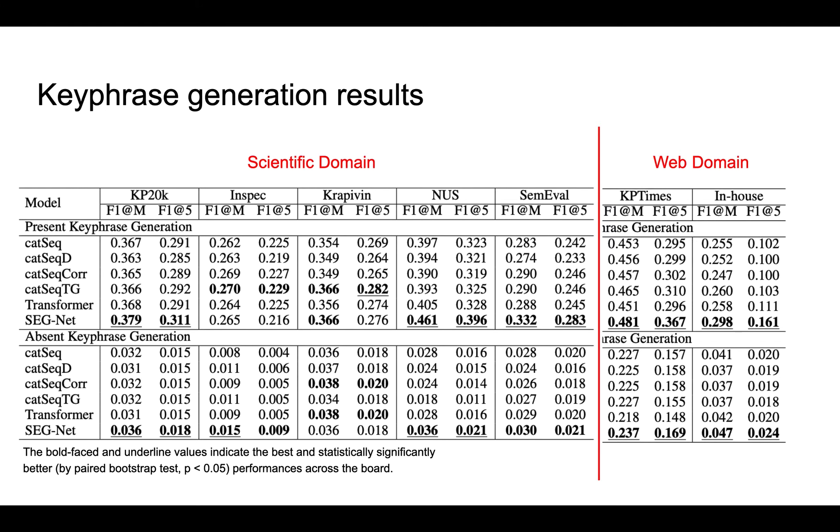This table shows the performance of SIGNET on the seven datasets, compared to a number of baseline approaches. We can see that SIGNET outperforms all the baseline methods by a significant margin in three out of five scientific datasets and both web domain datasets for present keyphrase extraction. The slightly worse performance on the dataset Inspec is because its documents are very short. We can also see that SIGNET correctly generates more absent keyphrases than the baseline on almost all the experimental datasets.